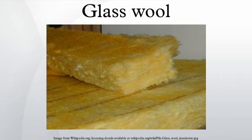Straps, or staple cloth or wire mesh across joists, can hold it up. Gaps between bats can become sites of air infiltration or condensation and require strict attention during installation. Careful weatherization and installation of vapor barriers is required to ensure that the bats perform optimally. Air infiltration can also be reduced by adding a layer of cellulose loose fill on top of the material.